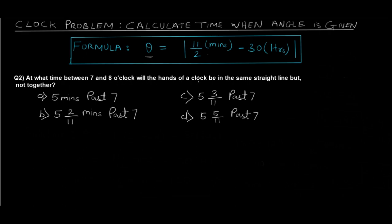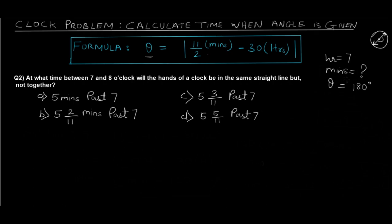Question 2: At what time between 7 and 8 o'clock will the hands of a clock be in the same straight line but not together? This is another variation — the time is 7 past something, so hours = 7. The hands are on the same straight line but not together, which means they are pointing in opposite directions, so the angle is again 180 degrees.